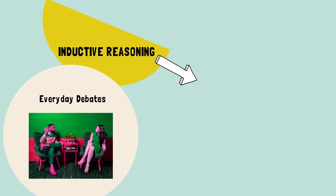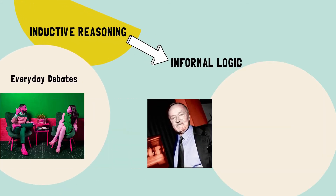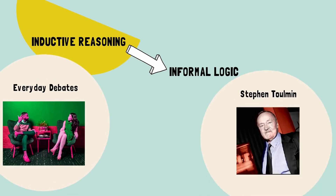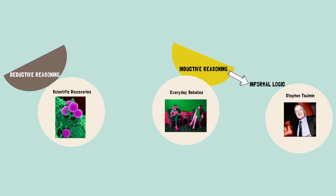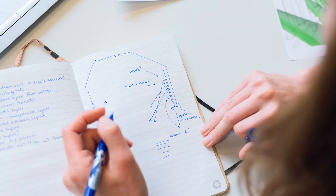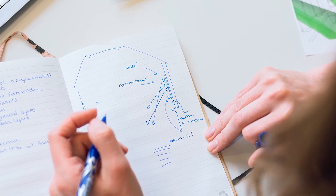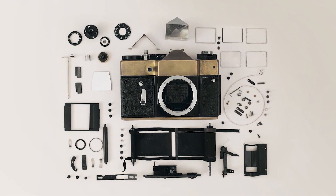Inductive reasoning is also known as informal logic, and one of the most important figures of informal logic was Stephen Toulmin. He was a British philosopher and educator who developed one of the most significant contributions to how we analyze arguments which occur in natural language. He came up with a model for analyzing arguments, which is used successfully in teaching students how to write assignments while applying critical thinking at the same time. Let's take a look at Toulmin's model for argumentation.